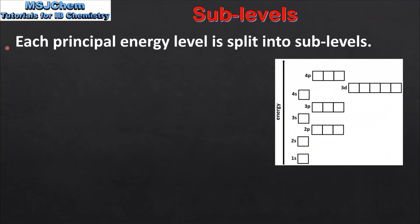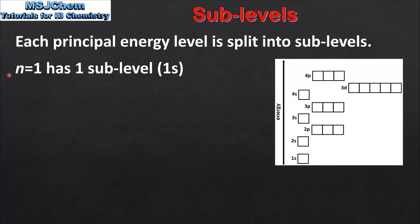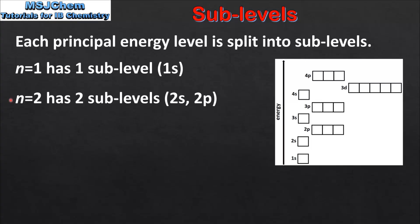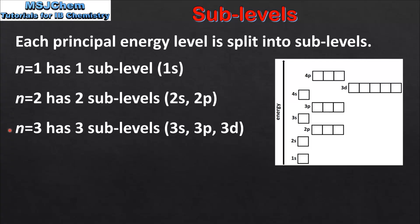Each principal energy level is split into sublevels. The first principal energy level, n=1, has one sublevel: the 1s sublevel. The second principal energy level, n=2, has two sublevels: the 2s and 2p sublevels. The third principal energy level, n=3, has three sublevels: the 3s, 3p, and 3d sublevels.